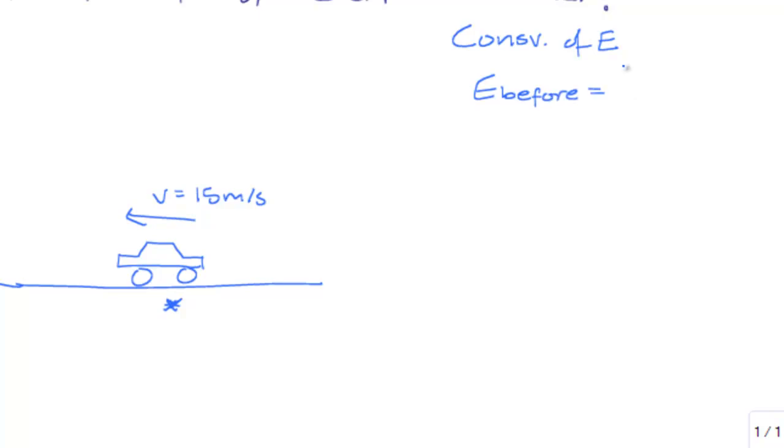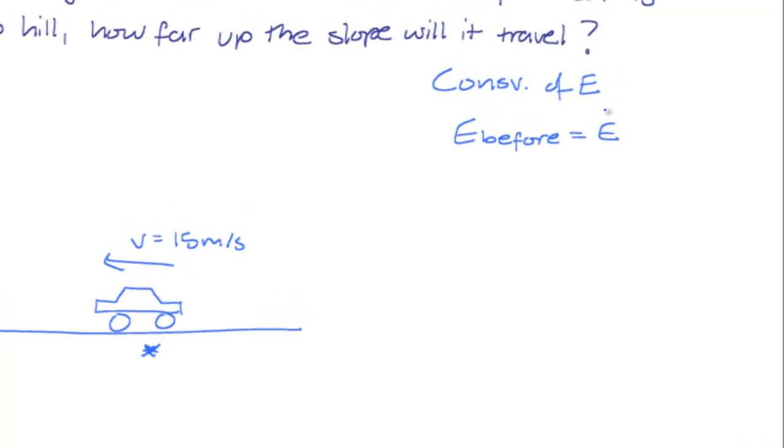So before the car started rolling uphill, it would have had one form of energy, which would be converted into another form after it started rolling uphill. And so the energy that it had before it started rolling uphill, which was kinetic energy EK, will be equal to the energy once it reaches that highest point on the hill, which will be completely potential energy EP.